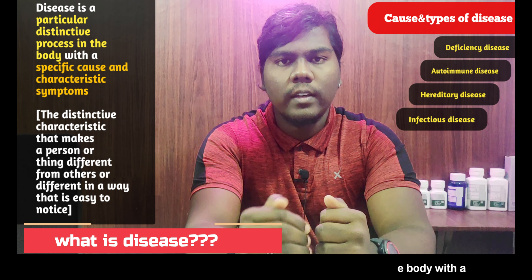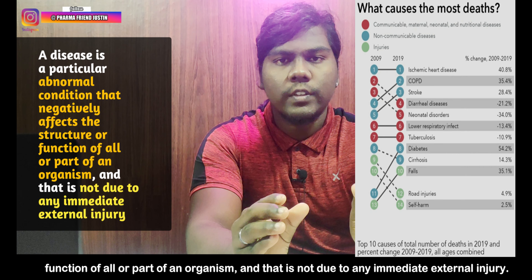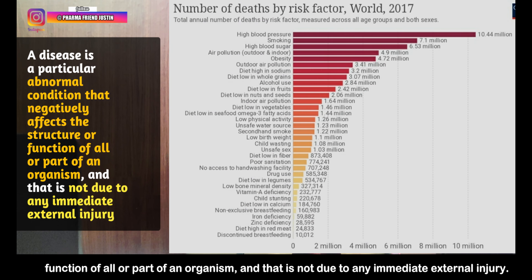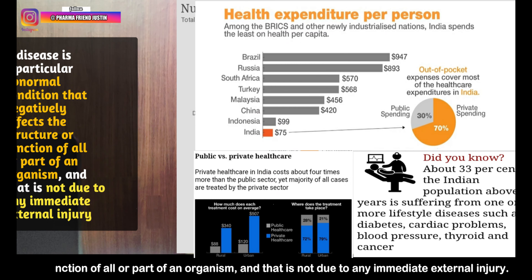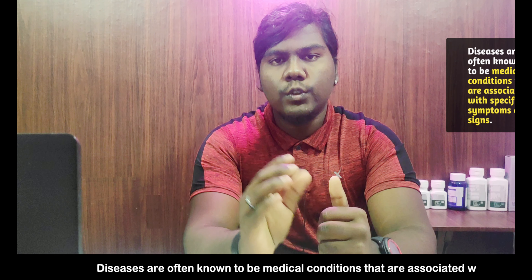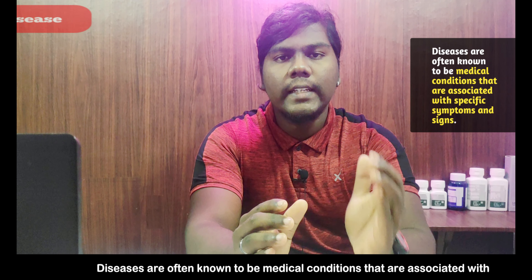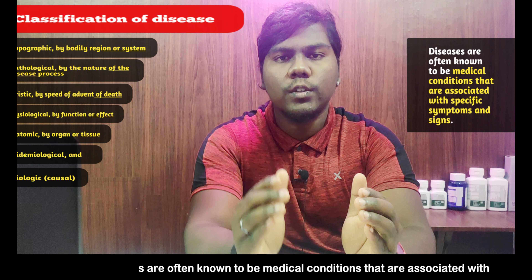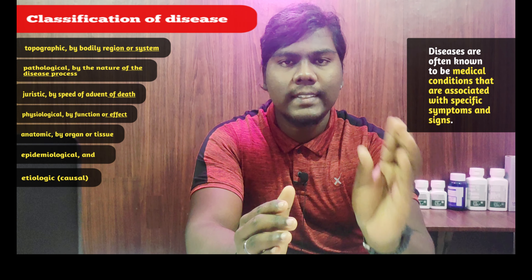What is disease? A disease is a particular distinctive process in our body with a specific cause and characteristic symptoms. In simpler terms, a disease is a particular abnormal condition that negatively affects the structure or function of all or part of an organism, and that is not due to any immediate external injury.